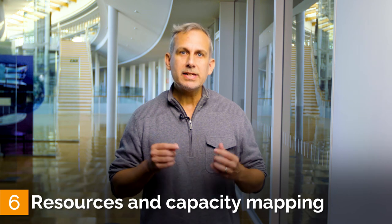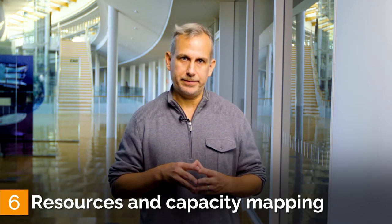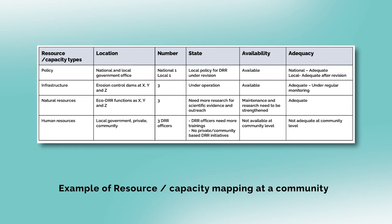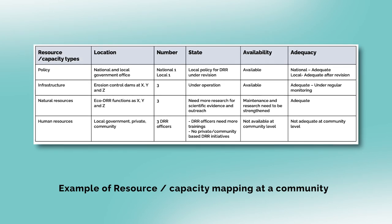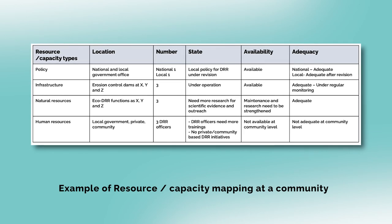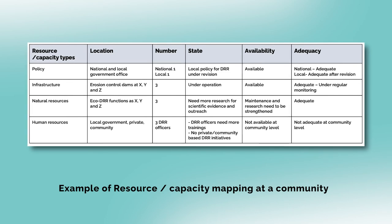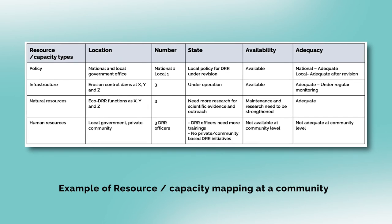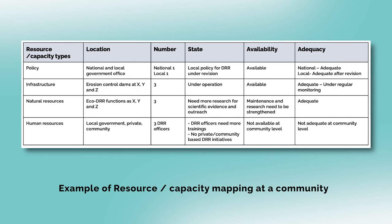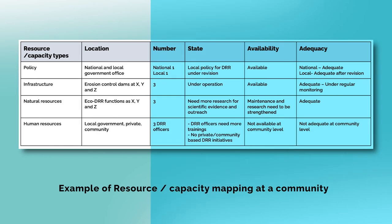Finally, step six is resource and capacity mapping. After risk assessment and mapping, as well as developing risk scenarios, communities can assess the available resources and capacity that could be mobilized in the event of a disaster. The community should prepare an extensive list of available resources and existing capacities, and assess their condition to make sure they can be used during a disaster. This process allows communities to identify gaps in resources and capacities.